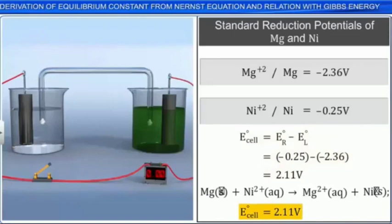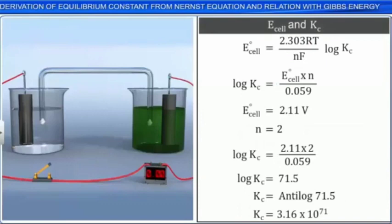You can rearrange the equation that relates E cell to the equilibrium constant to solve for the log of Kc. You should memorize this equation. You can then substitute your information about this cell into the rearranged equation. Log of Kc is equal to 71.5.